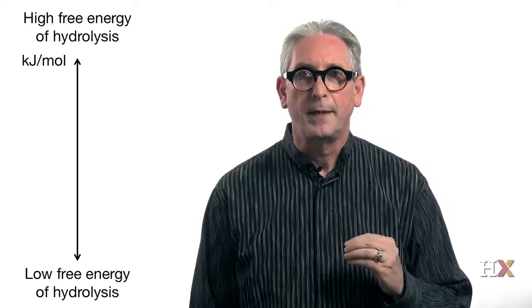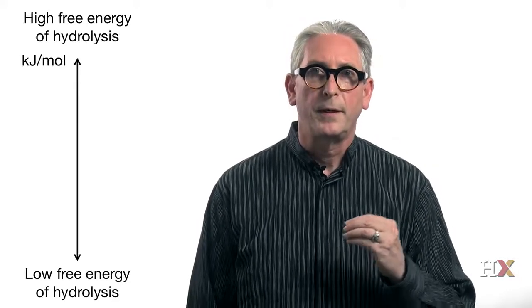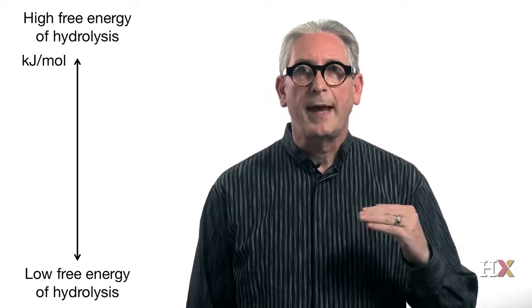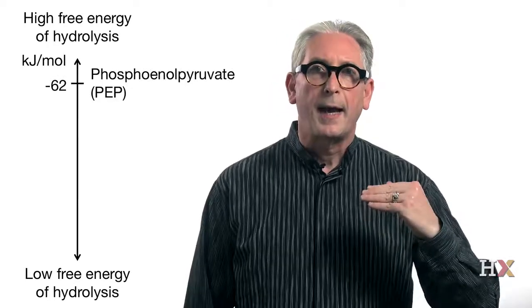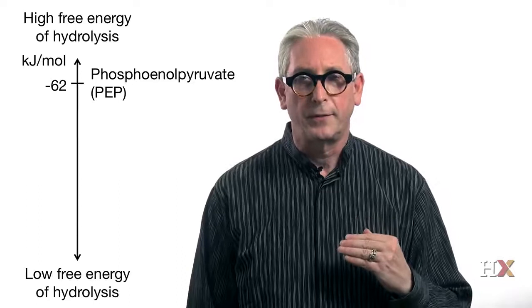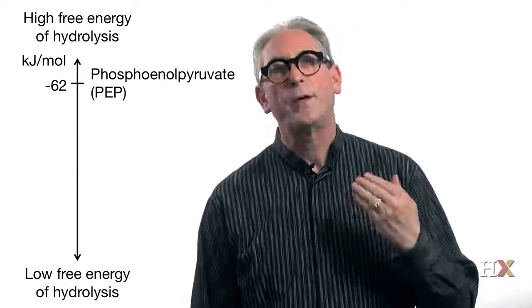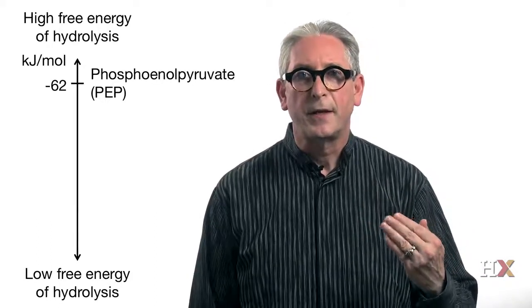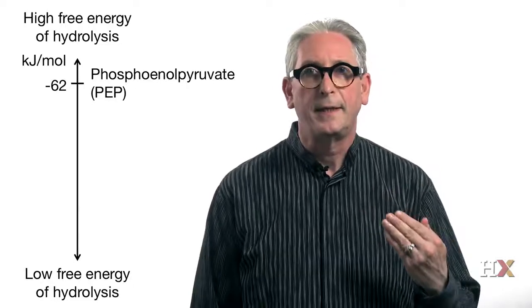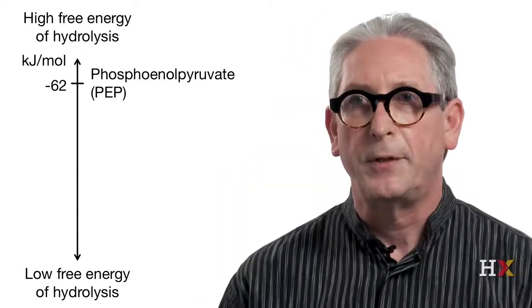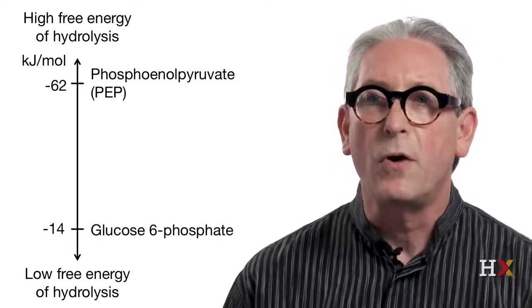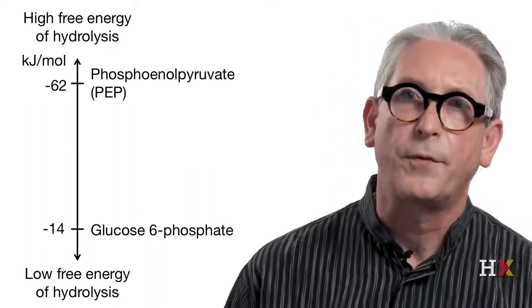To better understand the central role of ATP, we will use a few examples with intermediates of glycolysis. In this graph, we have positioned the hydrolysis potential of different molecules, starting with phosphoenolpyruvate. It has a very high free energy of hydrolysis with a delta G of minus 60 kJ per mole. At the bottom of the graph, we have glucose 6-phosphate, which has a lower free energy of hydrolysis: minus 14 kJ per mole.